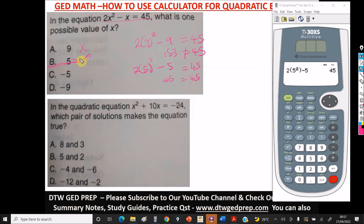So that's how you solve it, looking for a possible value of x just from your options. You don't need to start doing all the factoring and all that. Now let's look at this. It says in a quadratic equation x² + 10x = -24, which pair of solutions make the equation true? You can also use, instead of using both values, just use one value. I will always say pick the positive value so it's easy for you to quickly resolve.